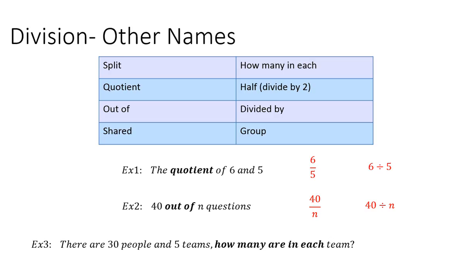Example 3, there are 30 people in 5 teams. How many are in each team? So what you would do is you would take the number of people, the total number of people, 30, and divide it by the number of teams. And that will tell you how many people are in each team. So 30 divided by 5.